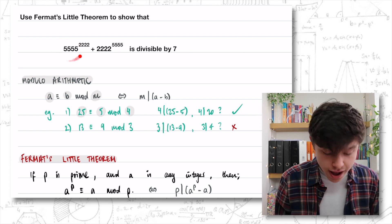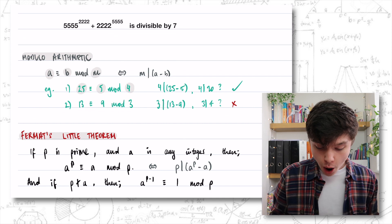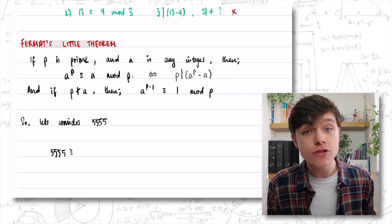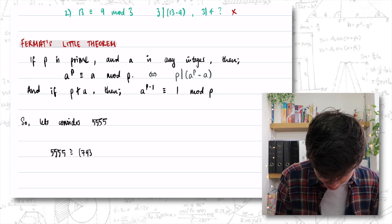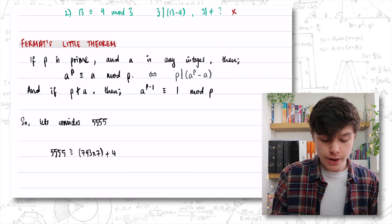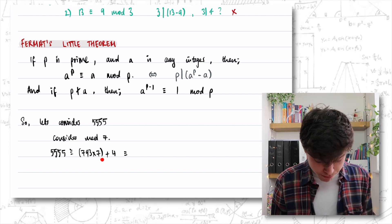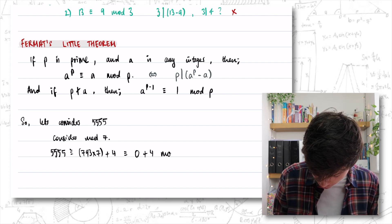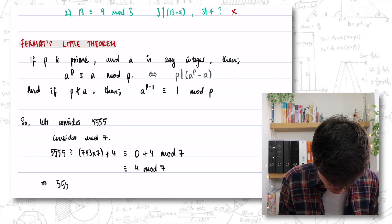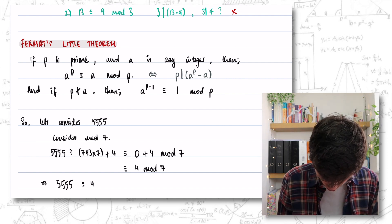The first thing I'm going to look at is 5,555 and we're going to consider that modulo 7. Let's split it up into 7 times something and then add something else. 5,555 is 793 times 7, and then we need to add on 4. This multiple of 7, modulo 7, is just the same as 0 mod 7. So we get 0 plus 4 mod 7, and 5,555 is congruent to 4 mod 7.